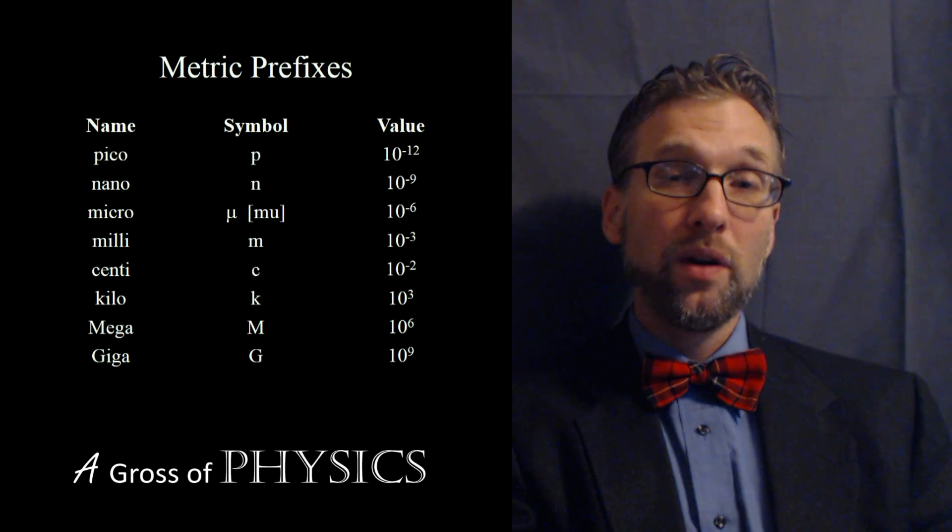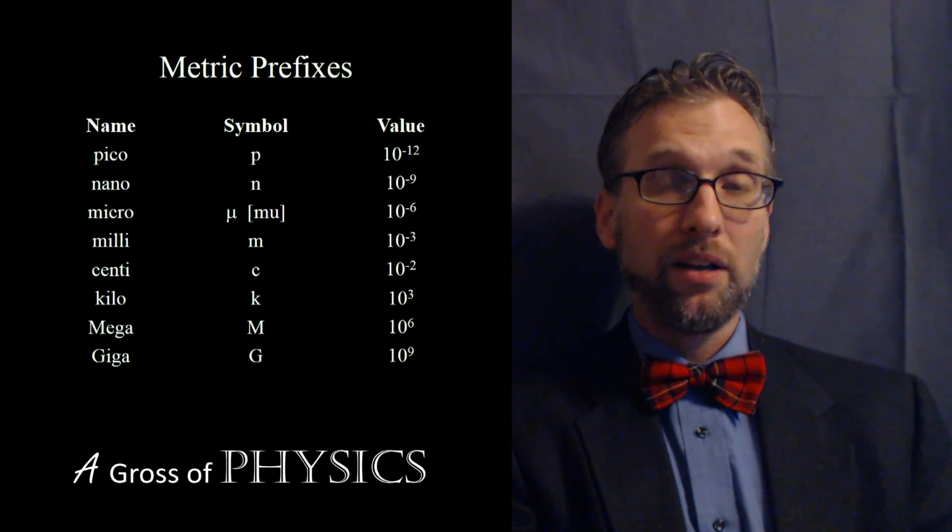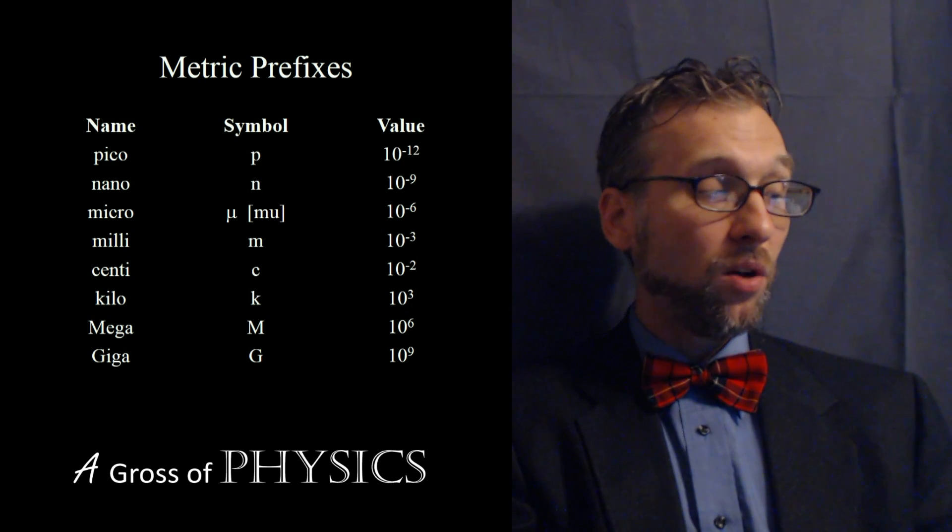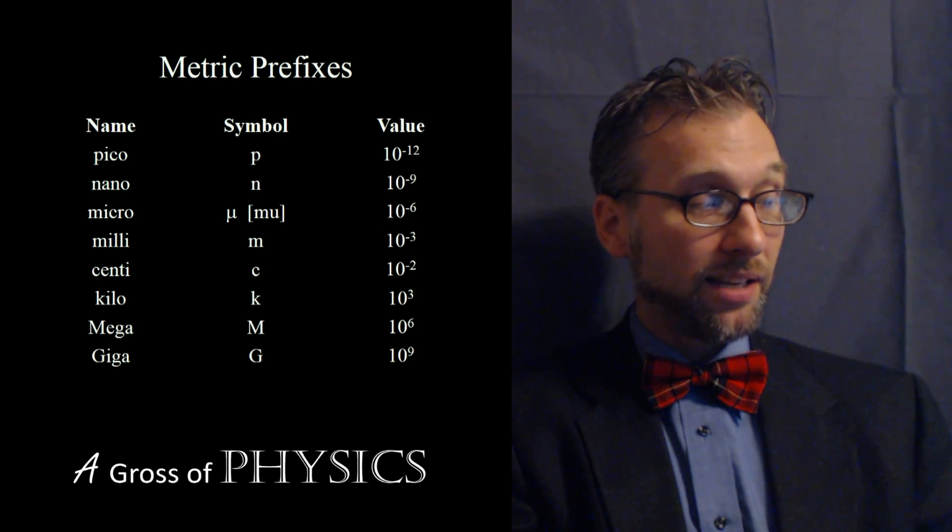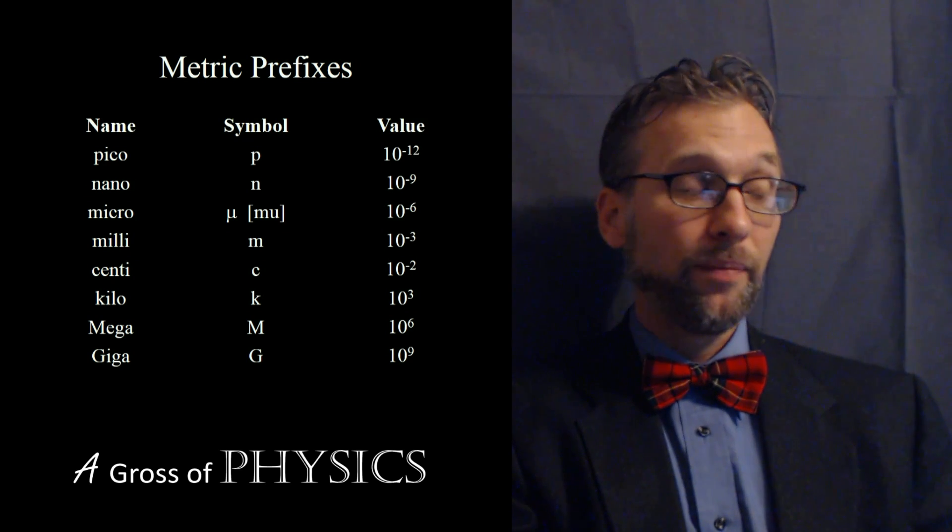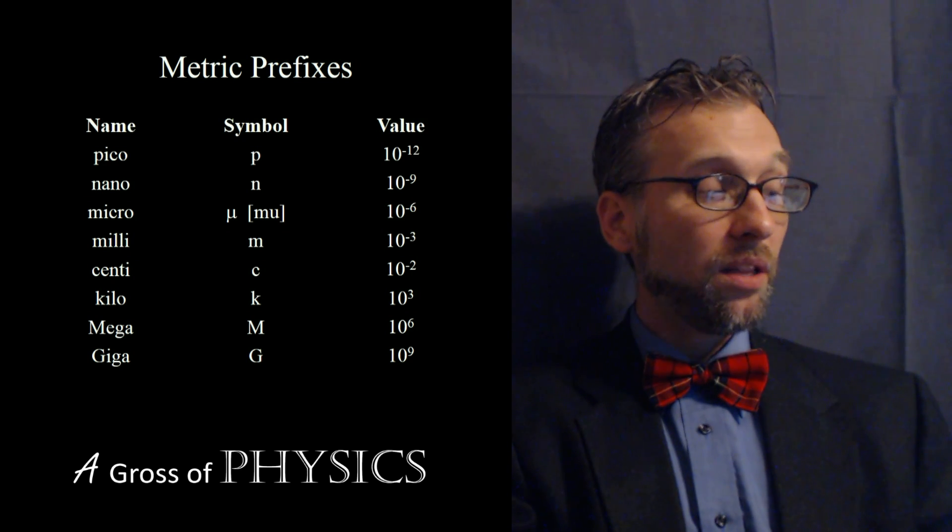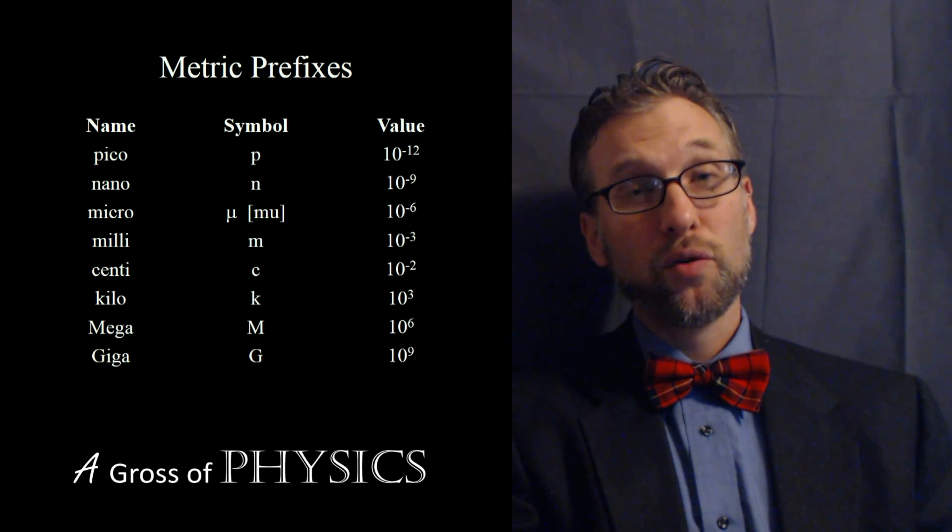Now the different values go in the chart from small to big and the values range from the pico to the nano to the micro to the milli to the centi. Those are all less than one to the kilo to the mega and to the giga for greater than one.